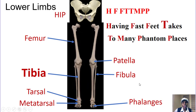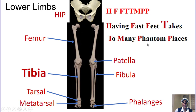Now let's go to the lower limb. We have the hip bone, then the femur, the patella, the tibia and fibula, the tarsal, metatarsal, and phalanges. The acronym is: 'Having fast feet takes too many phantom places' — hip, femur, fibula, tibia, tarsal, metatarsal, phalanges, patella.